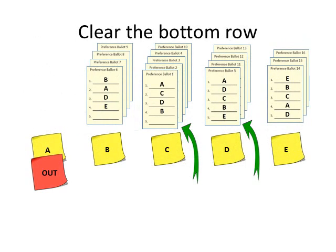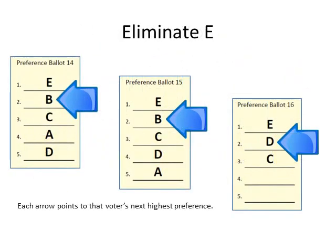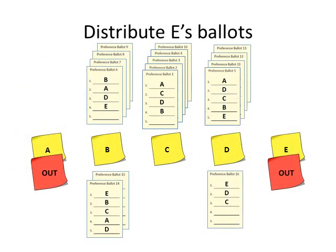Before doing so, however, any ballots below the sticky notes should be placed on the appropriate stacks above the sticky notes. Inspecting the three ballots in the stack for E, we see that the voter's next highest preference on ballots 14 and 15 is B, and the voter's next highest preference on ballot 16 is D. So we put ballots 14 and 15 below the sticky note for B, and ballot 16 below the sticky note for D.